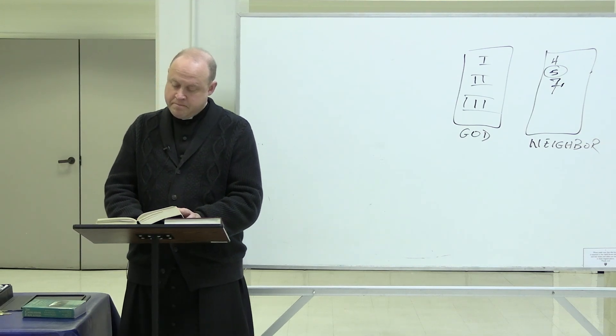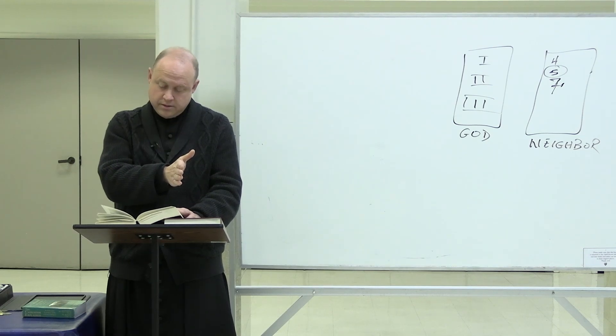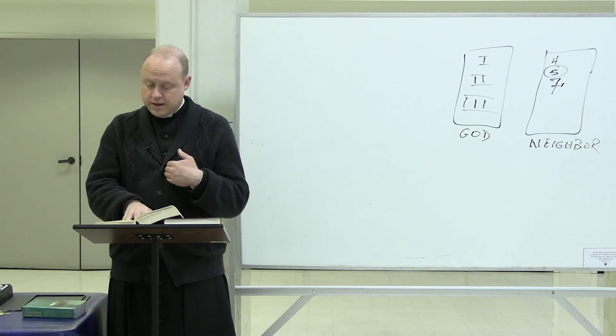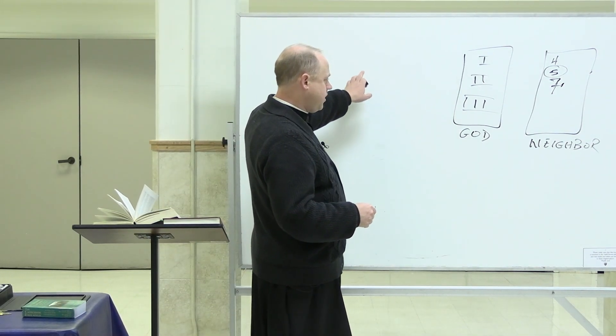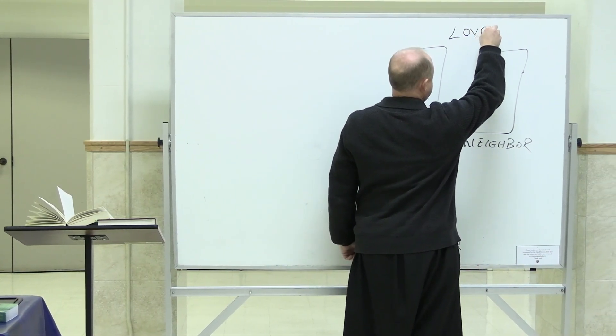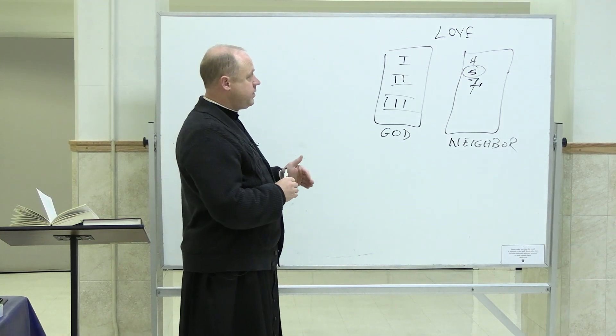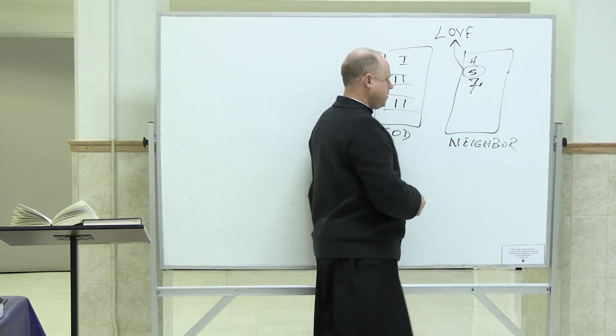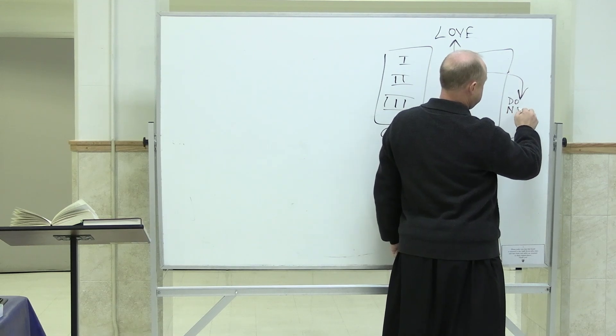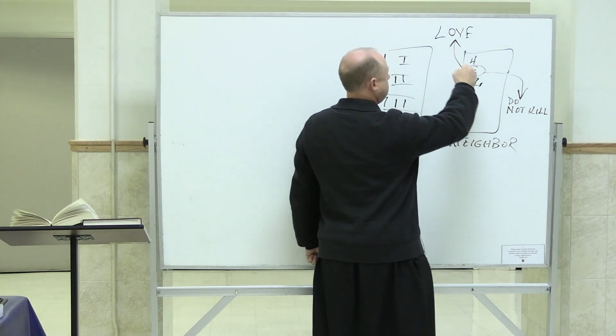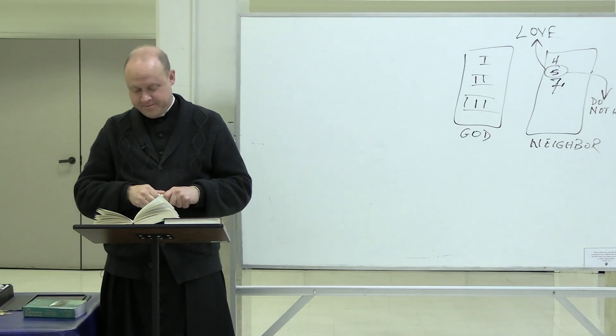There are two parts of the commandment then. Two-fold obligation. One is prohibitory. That's a forbidding to kill. The other is mandatory and commands us to cherish sentiments of charity, concord, friendship towards our enemies. So we know that the greatest of all commandments God gave to us is love. Love of God, love of neighbor. Love the Lord thy God with thy whole heart and thy whole soul, and thy neighbor as thyself. That being the case, this commandment is protecting that.